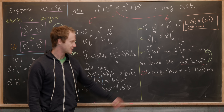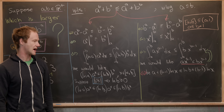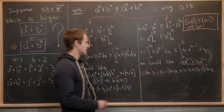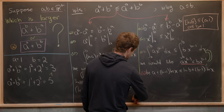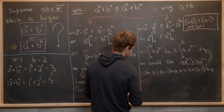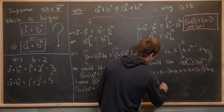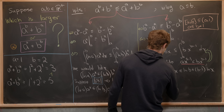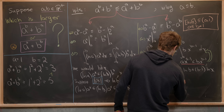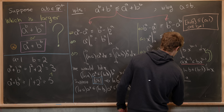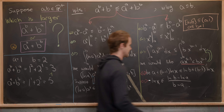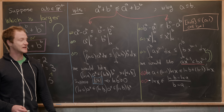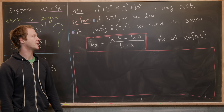We can rearrange and solve for ln(X), giving the equivalent condition: ln(X) is less than or equal to (ln(B) minus ln(A)) over (B minus A). This inequality is what will finish this whole case off.